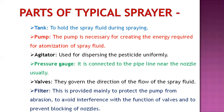The agitator is used for dispersing the pesticide uniformly. Its function is to keep the liquid in the tank in constant motion to prevent solid matter from settling down at the bottom. Next is the pressure gauge, which is used to record pressure at various points such as the tank and discharge points connected to the pipeline near the nozzle.